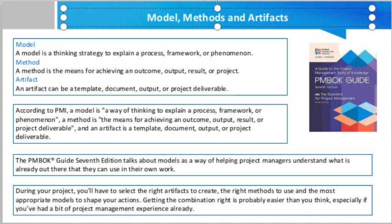Some categories of model might have several options inside them. For example, there are several models for team development, but a very popular one is Tuckman's model of forming, storming, norming, performing, and adjourning. Some models are most appropriate for different project performance domains — for example, you would use conflict models like Thomas-Kilmann in the team performance domain.